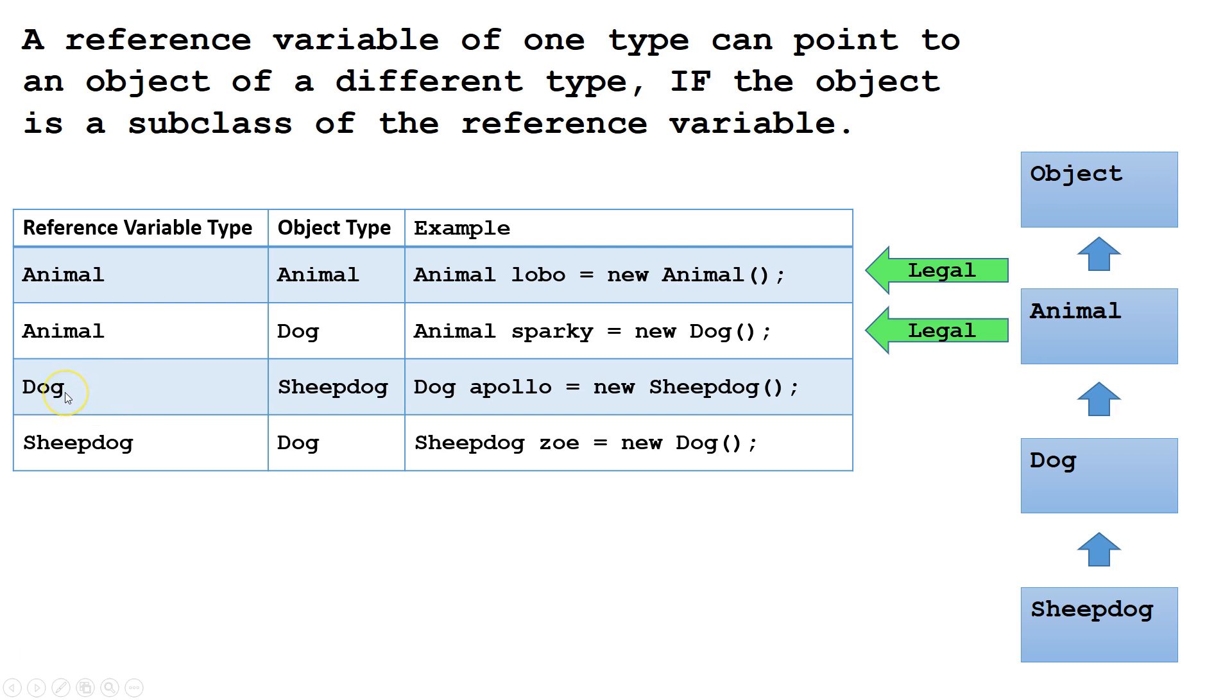Third, we have a Dog type reference variable and a Sheepdog object. This is, again, legal because a Sheepdog is a subclass of Dog.